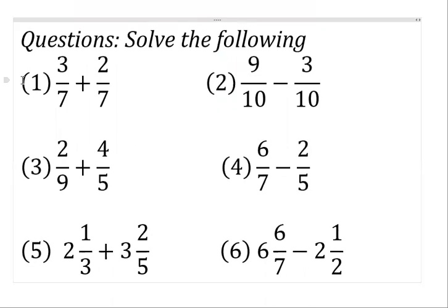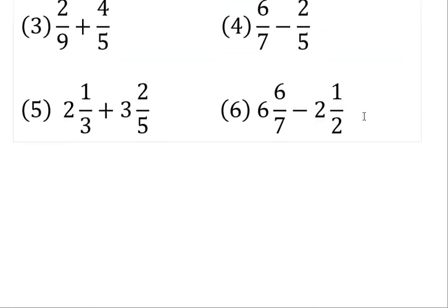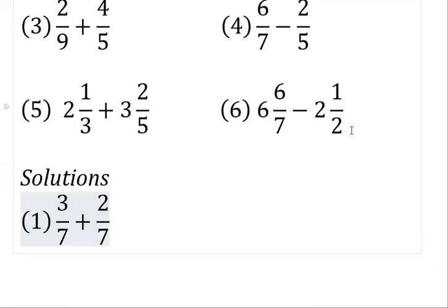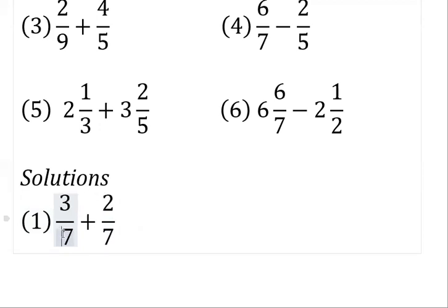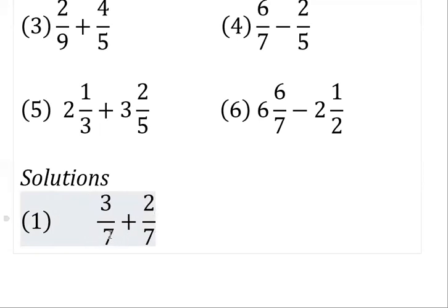Starting with question number one, we have three over seven plus two over seven. Now in fractions, if you are solving any fraction — whether you are adding or subtracting — the moment the fractions have the same denominator, you don't have to worry too much. All you need to do is pick the common denominator and apply the operation to the numerators.